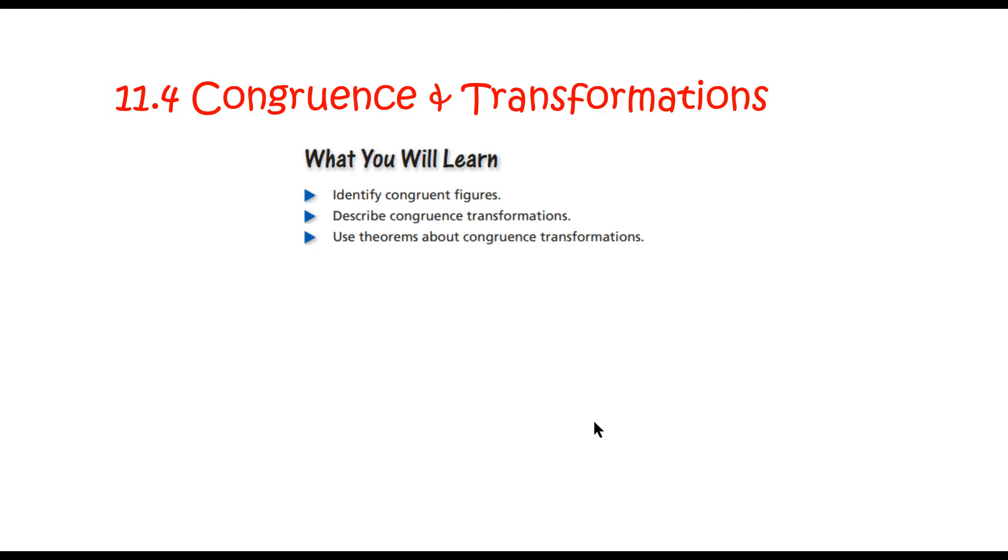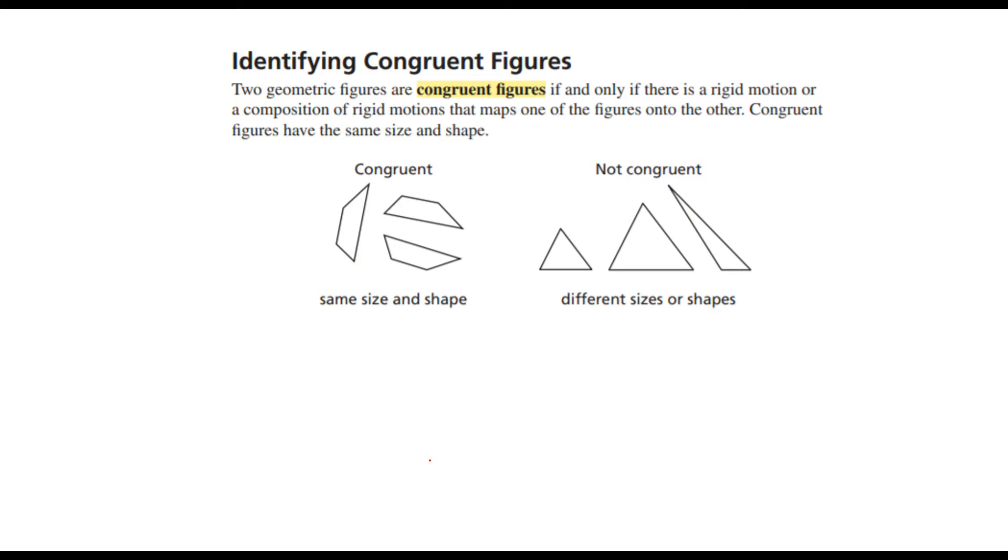First, let me get my pen handy so I can annotate as I go. All right. So first off, the main definition we need is congruence. Congruent shapes means that they're the exact same size and shape.